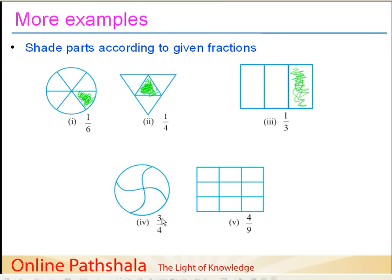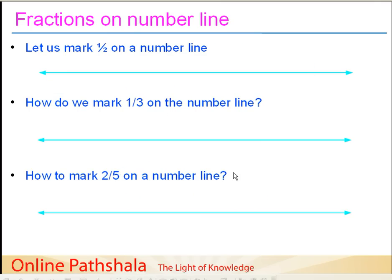Some more examples. For 3 by 4, we shade 3 parts out of 4 parts — you can select any 3 parts: 1, 2, and 3. For 4 by 9, we have 9 parts and take any 4 parts. The numerator decides what we use for shading: 1, 2, 3, and any one more as the 4th part. So this is 4 out of 9. In the next session we will learn about representing fractions on a number line.